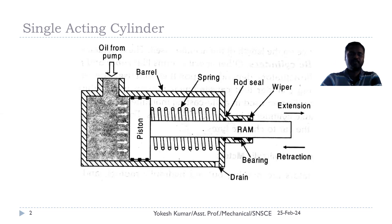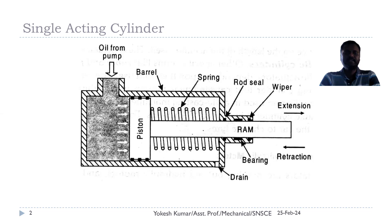Because the oil pressure is reduced — we are no longer connecting this port to the pump — the pressure automatically reduces in the blank end of the cylinder. Therefore, the spring pressure, being higher than the oil pressure, makes retraction of the cylinder. The oil is forced out via this port back to the reservoir. This is how the single-acting cylinder works.